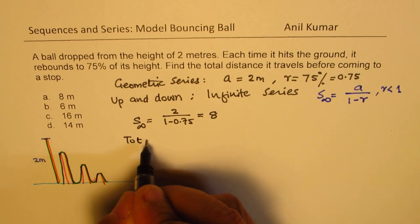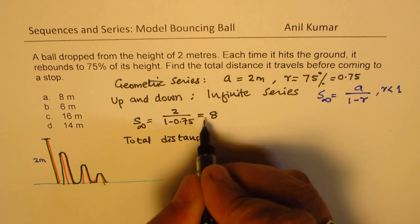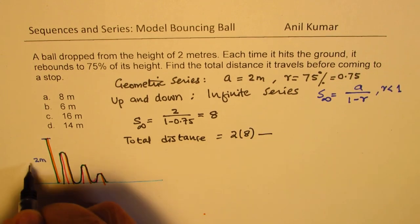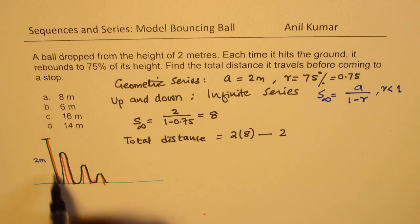So total distance will be 2 times 8 minus 2 meters. Since it is not going up 2 meters.